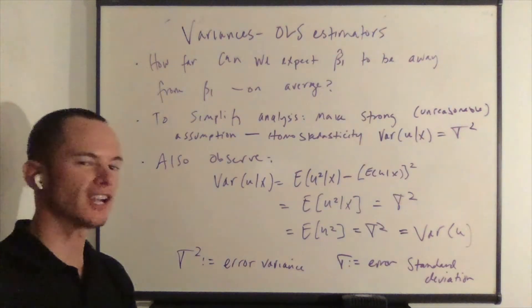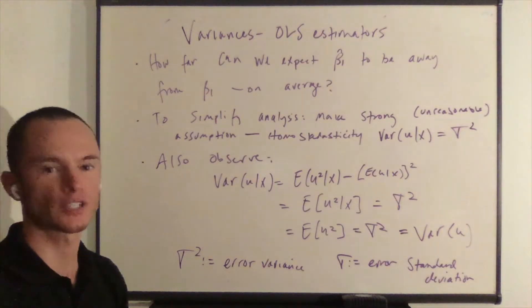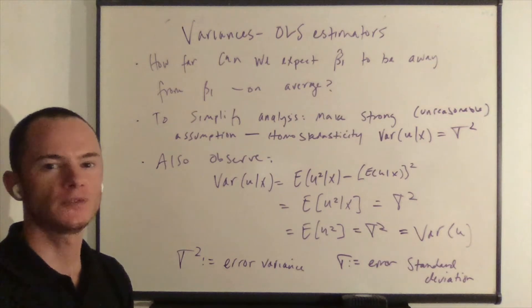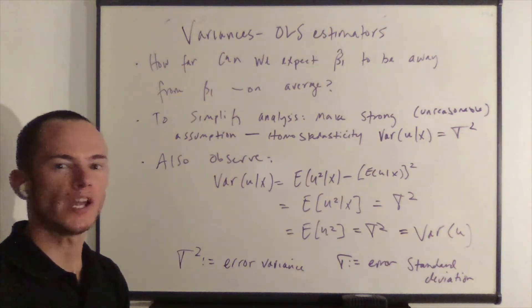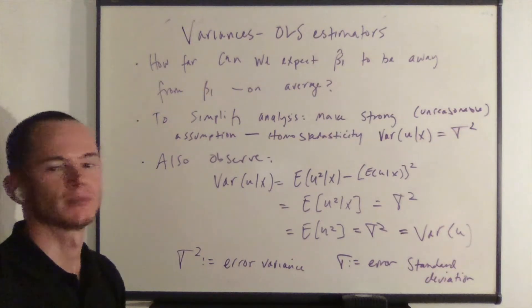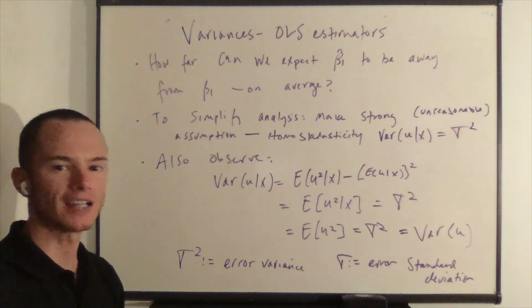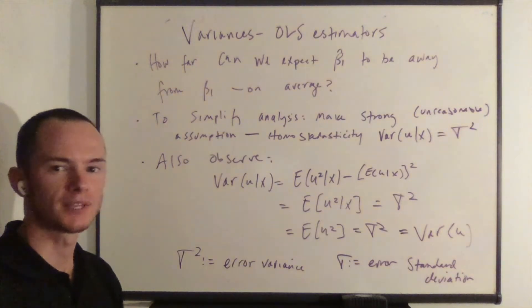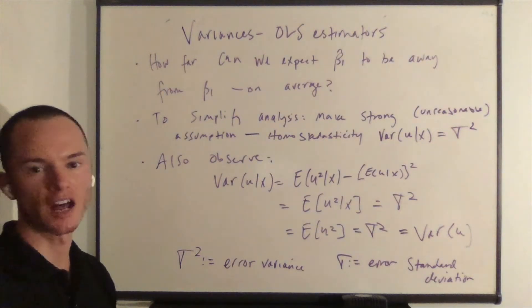When thinking about the variances, we want to answer the question: how far can we expect β̂₁ to be away from β₁ on average? Likewise, how far can we expect β̂₀ to be away from β₀ on average?